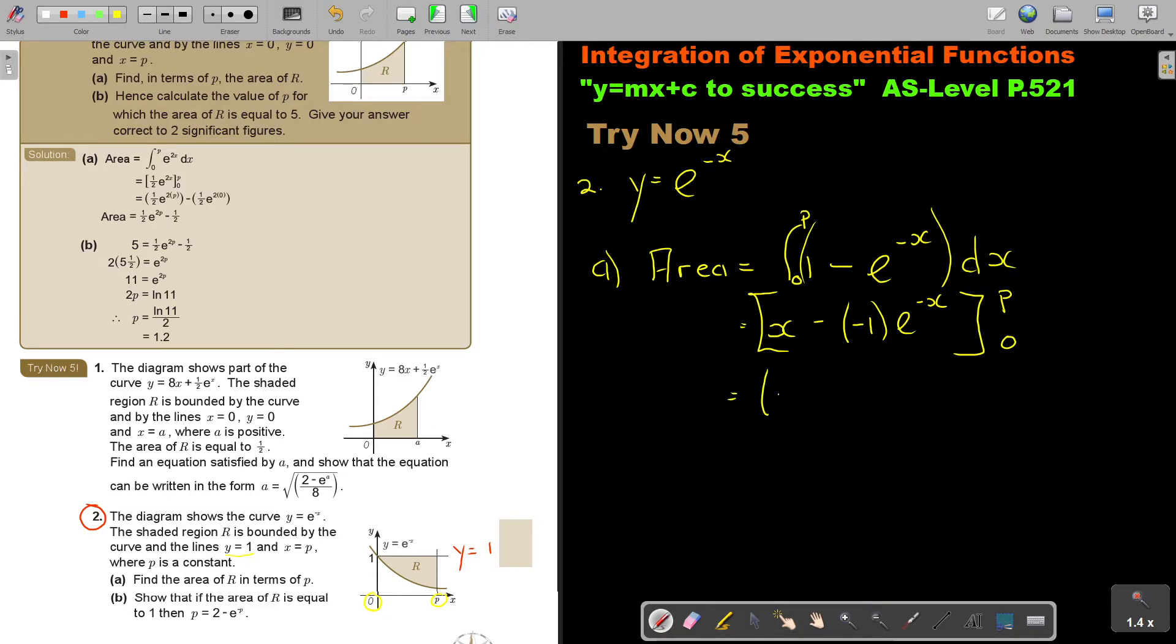So in the place of this, I'm going to be P plus E to the power negative P. And then I'm going to subtract 0. Remember, it's plus E to the power negative 0.